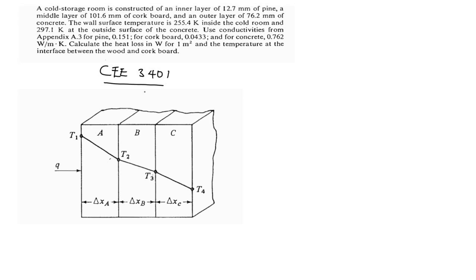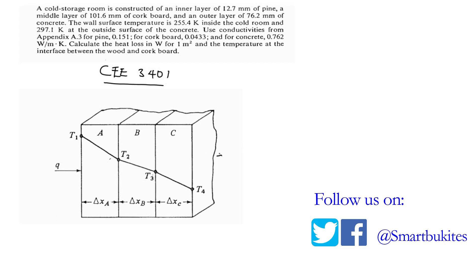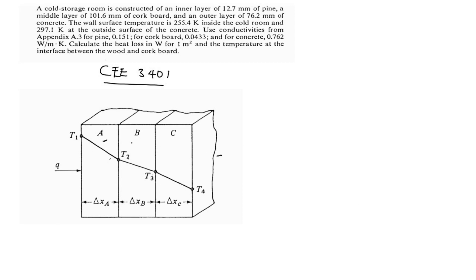Before we go to the calculation, let's take a look at this diagram. I'll explain something from the diagram which will help you solve the question, because this diagram is the exact diagram of what the question is talking about. So if there is heat transfer between walls, this is wall A, wall B, and wall C.